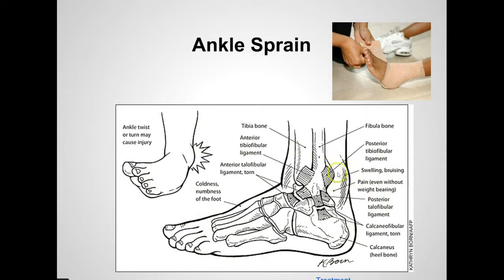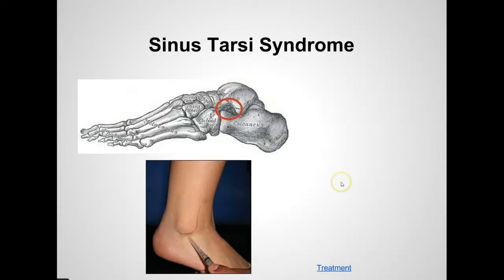Knowing a little bit about the anatomy is important. You may have swelling and bruising — you can see the skin is tenting here. If you have pain even without weight bearing, it's usually due to the swelling, because the swelling pulls on the different types of nerves in the area. If you can't walk on the ankle, it's important to get an x-ray, as we may be considering a break in one of the bones in the ankle region. That's an ankle sprain.